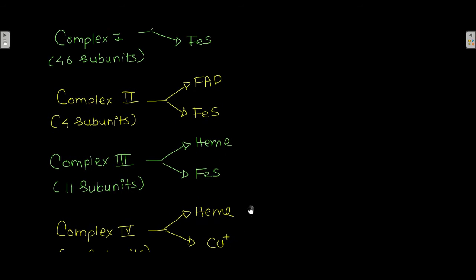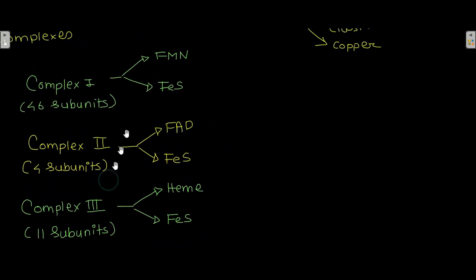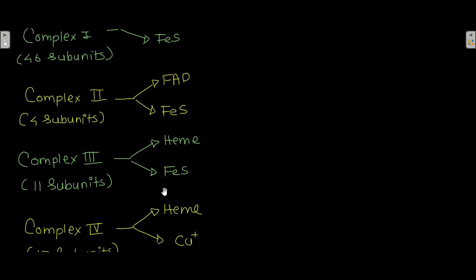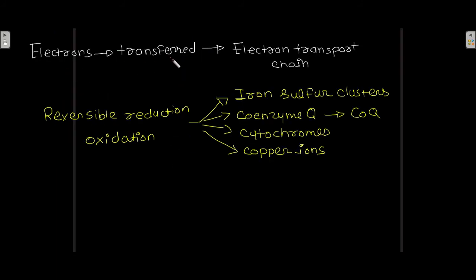Electrons are transferred along the electron transport chain by reversible reduction and oxidation of iron-sulfur clusters, coenzyme Q (abbreviated COQ), cytochromes, and copper ions. When these carriers are reversibly reduced and oxidized, that causes the transport of electrons across the electron transport chain.